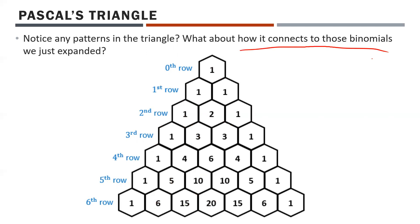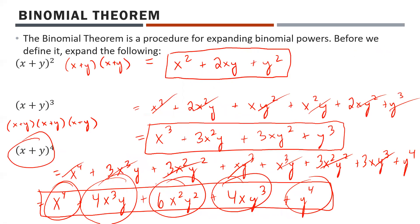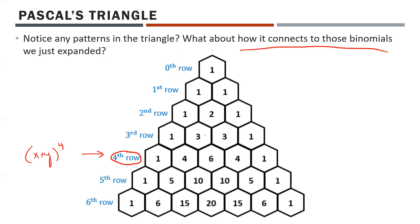In terms of how this connects to the binomials we just expanded: if you put a line down the center, Pascal's Triangle is also symmetrical left to right. This is what we call the fourth row, despite looking like the fifth. It's almost like we could apply our powers to it — x plus y to the power of 4 somehow connects to the fourth row: 1, 4, 6, 4, 1. And those are exactly the coefficients: 1, 4, 6, 4, 1. When you expand a binomial, Pascal's Triangle can be used to predict the coefficient patterns.